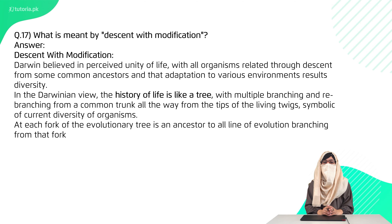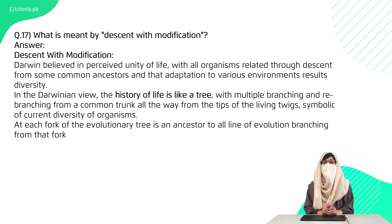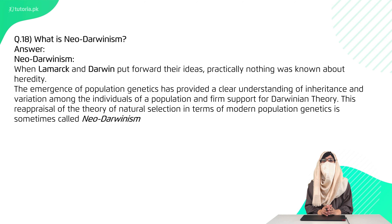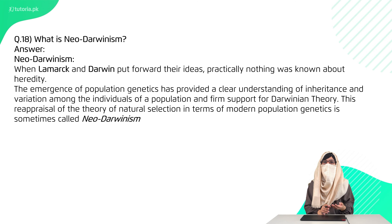Question 17 is: what is meant by descent with modification? Descent with modification means that every organism has descended from its parents but is not an identical copy — there are some modifications and changes due to changes in genetic material. Neo-Darwinism is the modified or adaptive form of Darwin's theory that explains evolution on the basis of genetic drift and genetic mutations, incorporating molecular genetics, and is also called the modern theory of evolution.